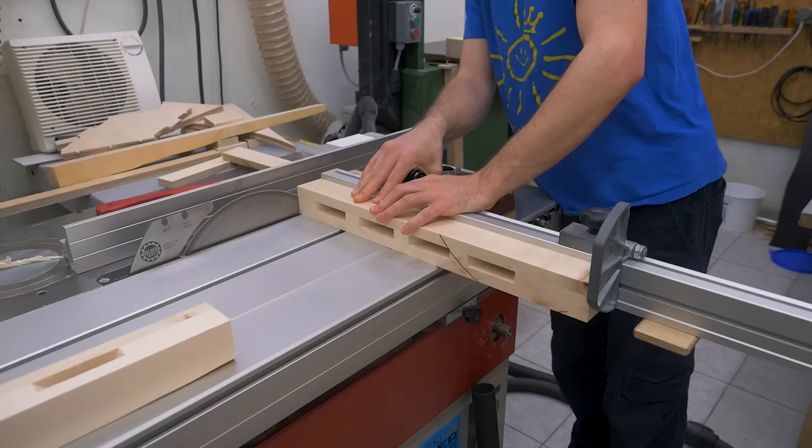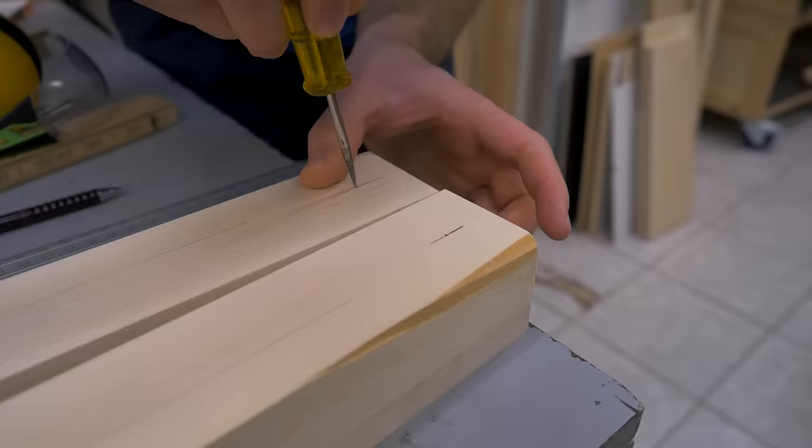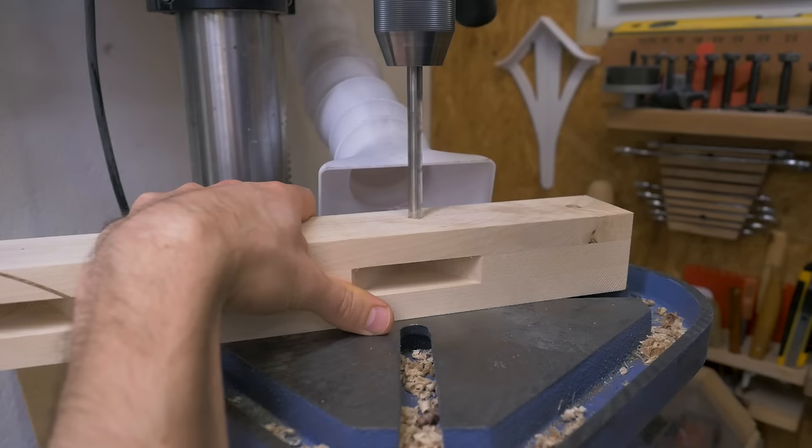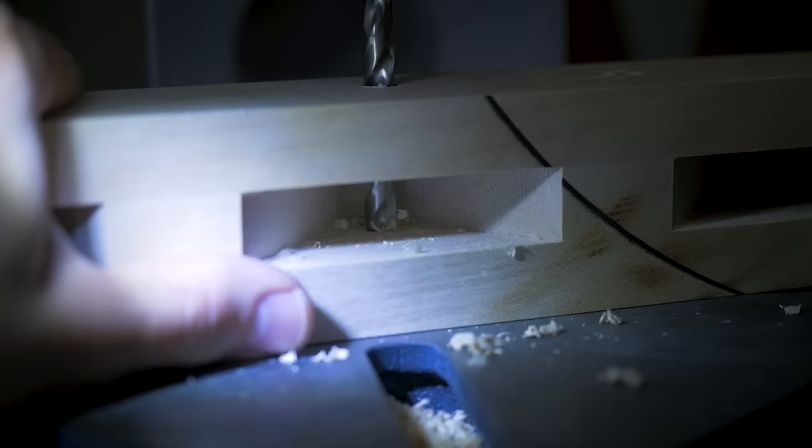Now I mark all the hole positions again. And then drill holes for the pivots and holes for bolts that will hold the springs. One half of the spring holes I cut threads into.